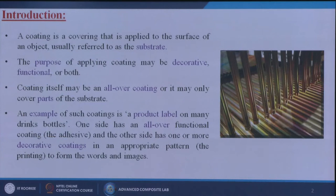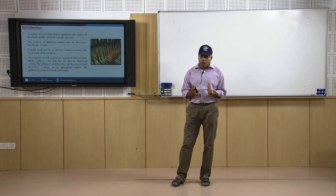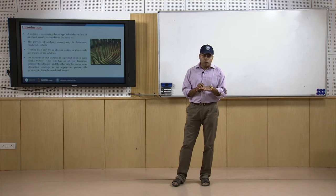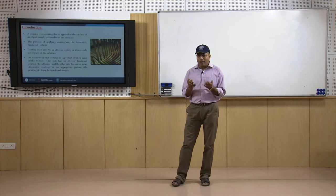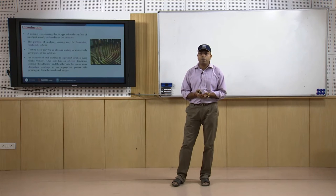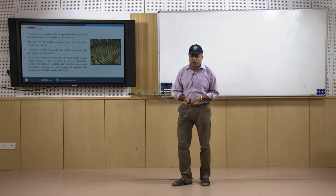A coating is a covering that is applied to the surface of an object, usually referred to as the substrate. The substrate is nothing but the materials or metals which we are going to coat. Either we can incorporate some materials inside the substrate to make composites, blends, or alloys, but here without changing its chemical structure, we are giving some kind of layers of materials onto that surface or substrate so that we can get some better enhanced properties.